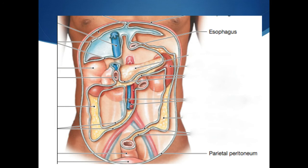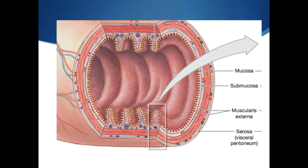Looking at this picture, we can see that the membrane surrounding the cavity of the peritoneum is called the parietal peritoneum, whereas what's covering each of these actual digestive structures is the visceral peritoneum. In the diagram showing the different layers of one of the intestines, the outermost layer is the serosa, also called the visceral peritoneum — what's physically touching the organ.